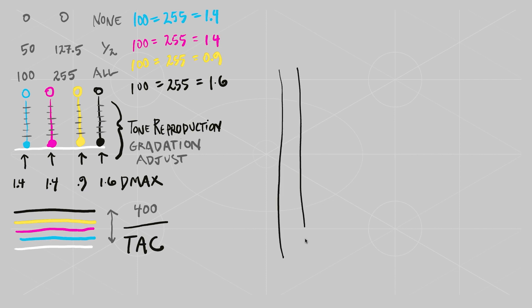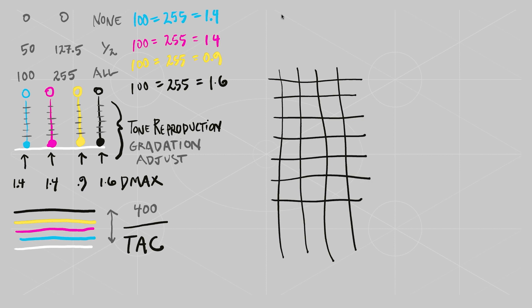So let's construct a table, and let's start to put some fictitious numbers into the table to see how this sort of a density control system works. We have color patches that we print, we have a target that we hope for, we measure the patches, and we make a correction.